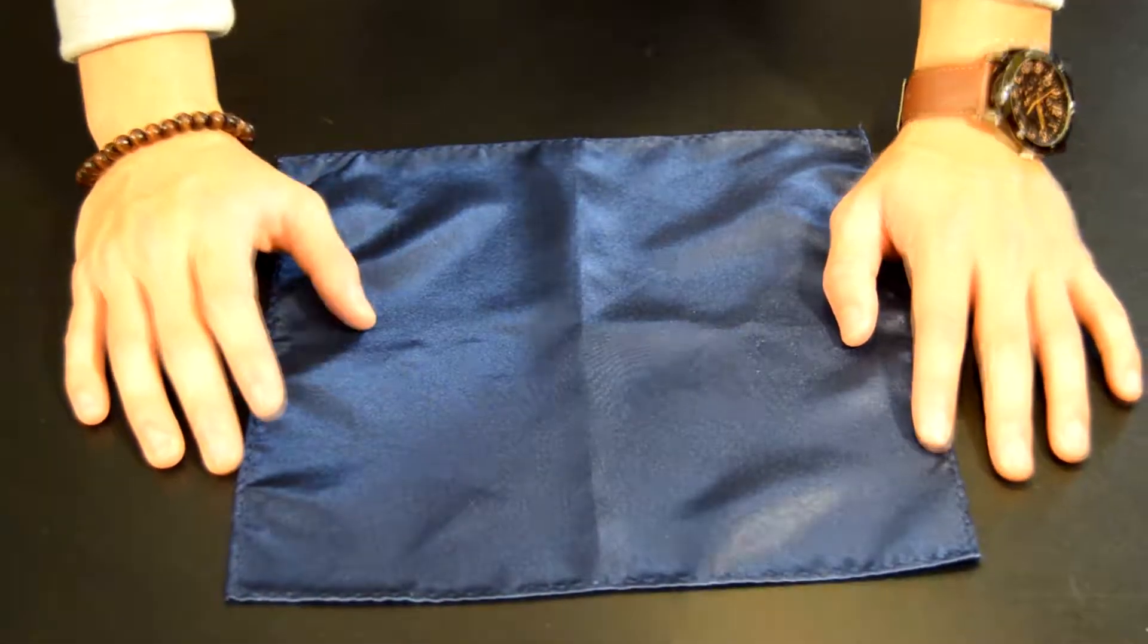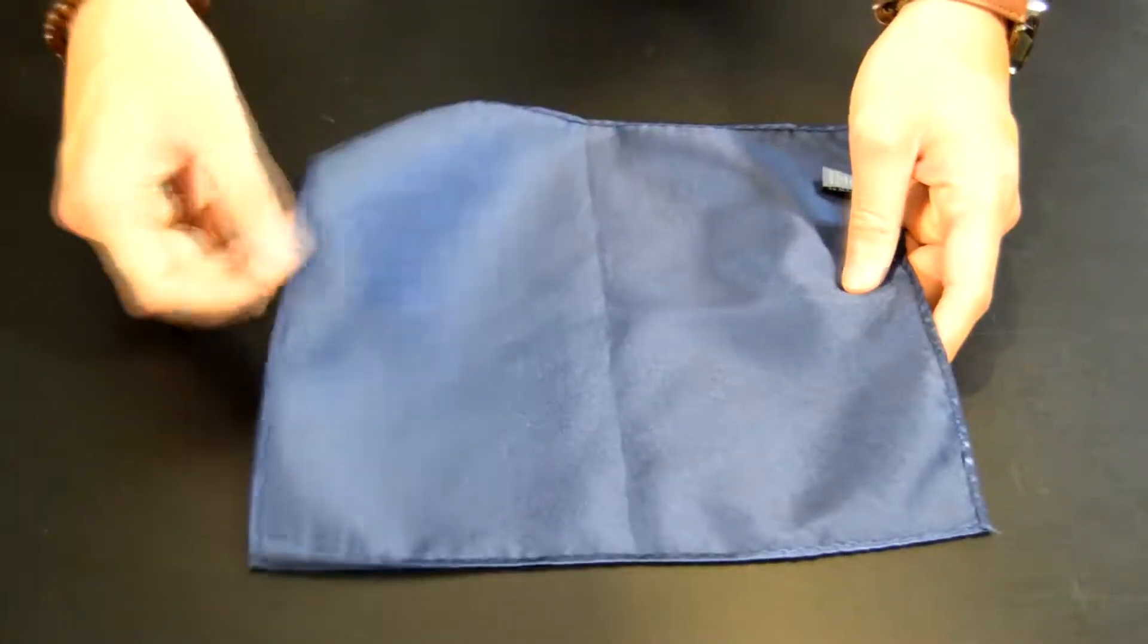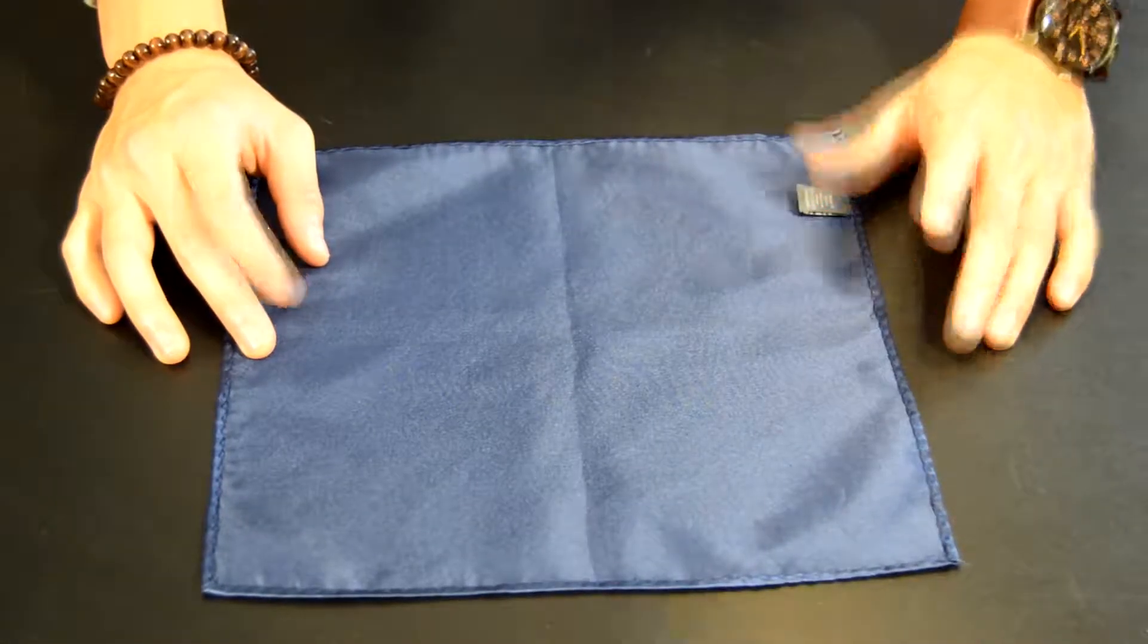How's it going guys, today we'll be doing the pyramid fold. Starting off, you're going to flip your pocket square over so it's upside down. Next, you're going to fold it like a hot dog.